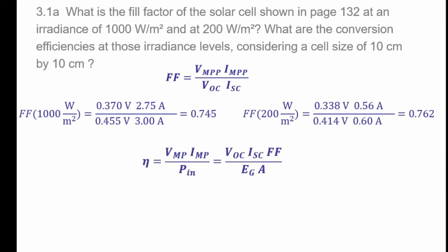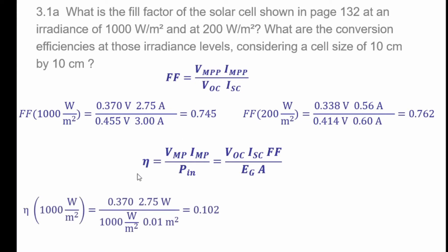More important is the conversion efficiency. This is the output power — the electrical power — which is V_mpp times I_mpp. The input power is the irradiance times the effective area. For 1000 W/m²: 0.370 V × 2.75 A = approximately 1.018 W output. The global irradiance is 1000 W/m² and the area of 10 cm × 10 cm is 100 cm², which is 0.01 m². That gives a conversion efficiency of about 10%.